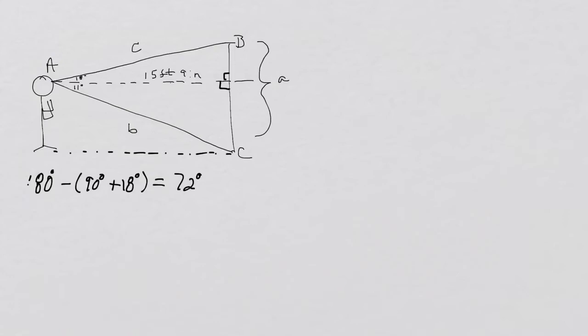To find angle C is the same thing. This is also perpendicular, that's a 90 degree angle. So to find angle C, you would just simply once again do 180 degrees minus 90 degrees plus your 11 degrees. When you do that, you will get a total of 79 degrees.